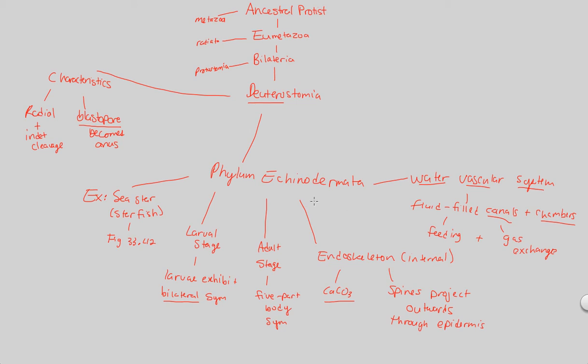Finally, now that we've covered phylum Echinodermata, we're going to complete this lecture by looking at one other very important large group of organisms that a lot of people consider the most successful of all, which is the phylum Chordata. Now the phylum Chordata is separate from Echinodermata, but they are closely related in the sense that they are both deuterostomes.